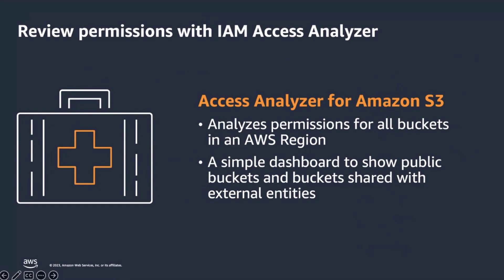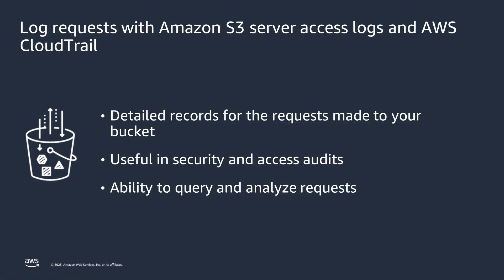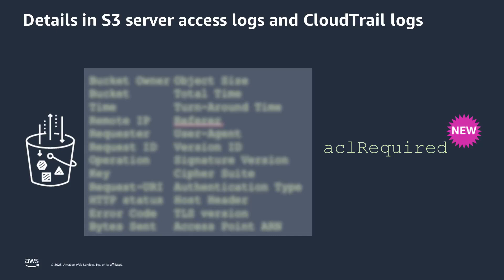Once you've configured access policies to S3 resources, it's also important to review permissions over time and log requests. With access analyzer for S3, you can continuously identify resources with overly broad permissions across your entire AWS organization. You can log requests using S3 server access logs and AWS CloudTrail. The ACL required field has been added to both server access logs and CloudTrail logs — if the request required an ACL for authorization, the ACL required value is yes. You can use this information to migrate those ACL permissions to the appropriate bucket policies, and after creating these bucket policies, you can disable ACLs for those buckets.